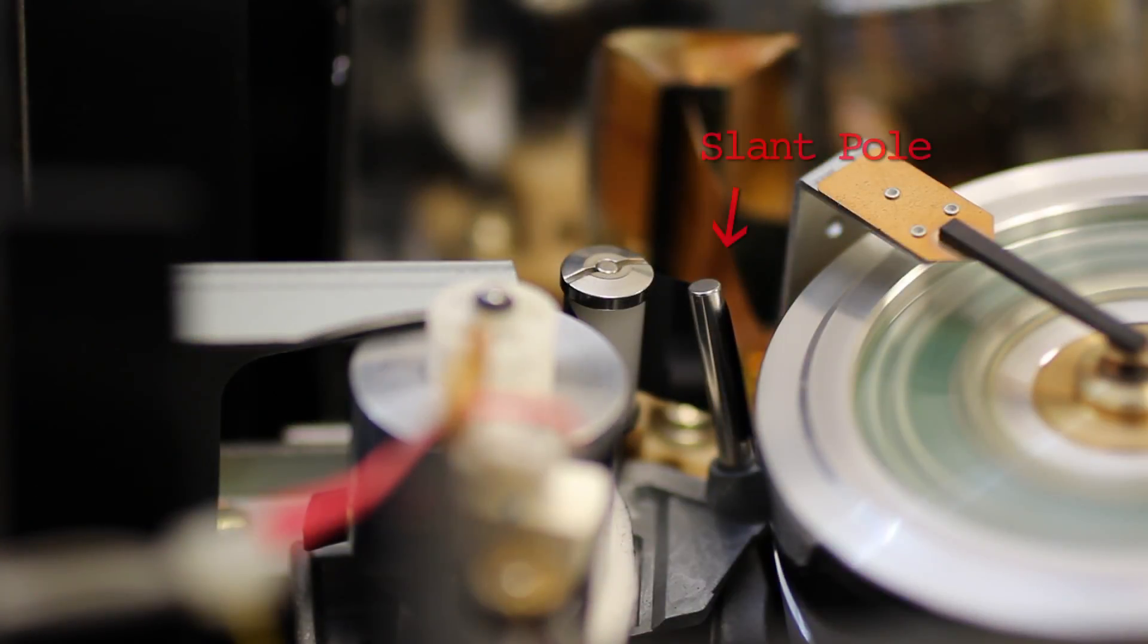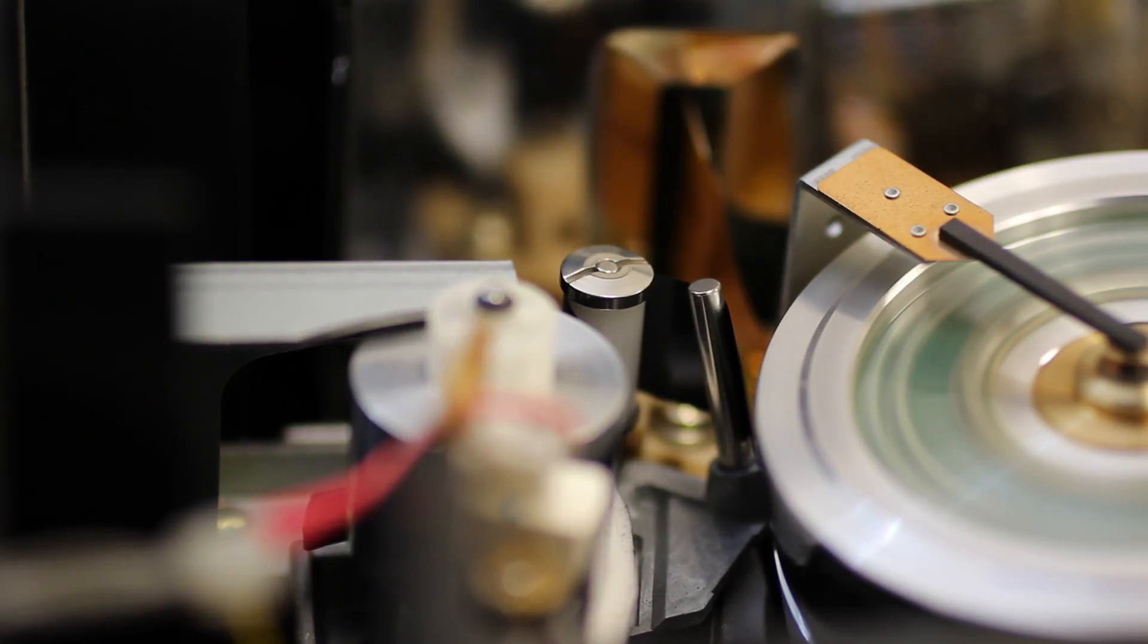The slant pulls allow the tape to contact the video drum at the right angle with proper tension for reading or writing the data to videotape. They have no moving parts, they're just steel posts helping the tape contact the drum properly.